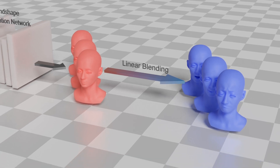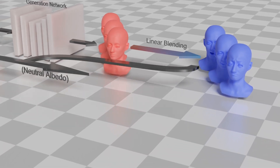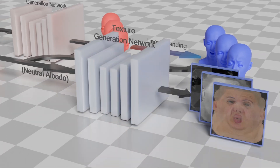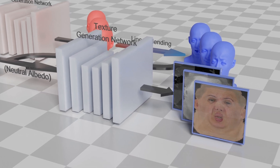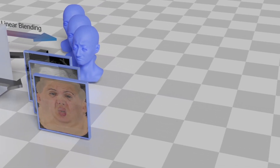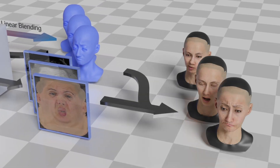For each facial expression, the texture generation network takes the expression geometry and neutral albedo as input to generate physically-based texture assets, including albedo, specular, and displacement maps. With the generated textures and geometries, we are able to render high-quality results.